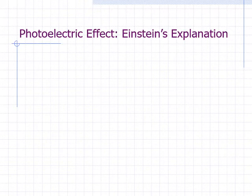In 1905, Einstein provided an explanation for the puzzling observations in the photoelectric effect experiments. For this, he won the 1921 Nobel Prize in Physics. Here's a summary of Einstein's explanation.